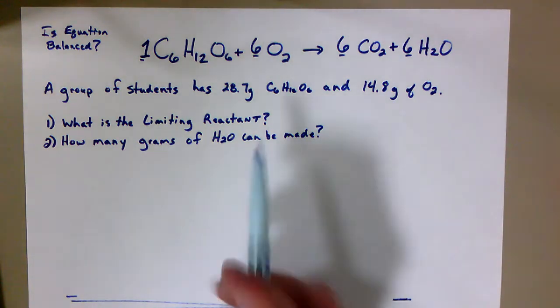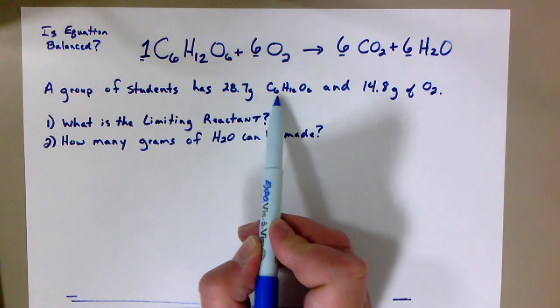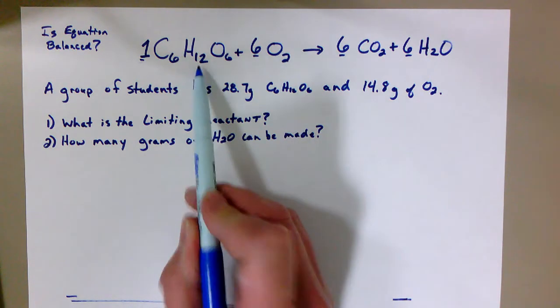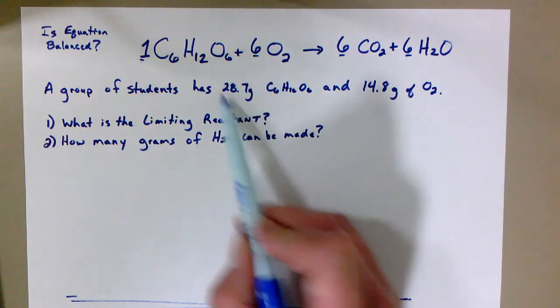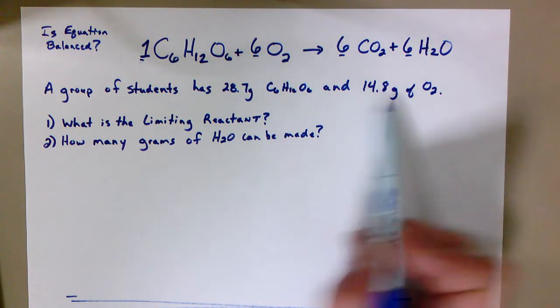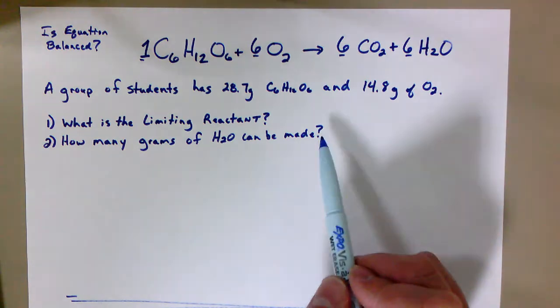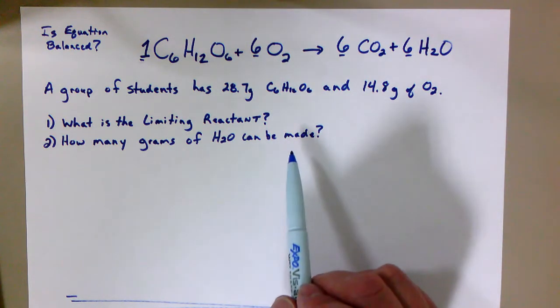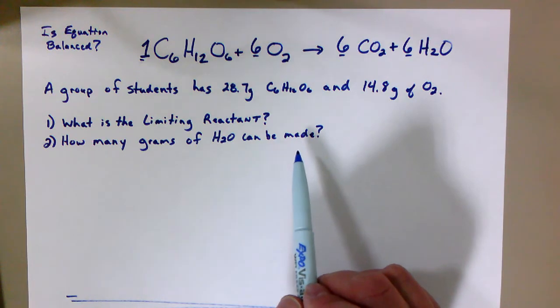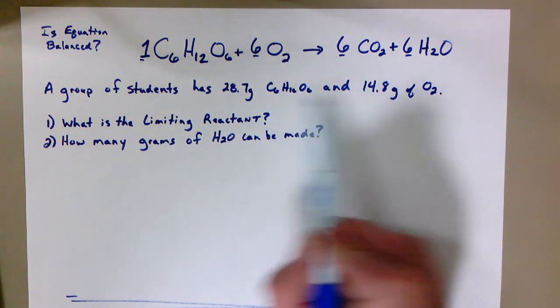The question is: a group of students has 28.7 grams of C6H12O6 and 14.8 grams of O2. So it's telling us how much of each reactant, how much of each ingredient we're starting with. Well, the question is how much will we actually be able to react? If we just dumped these all together, there's a really good chance it's not the right ratio and we'd have one of these left over.